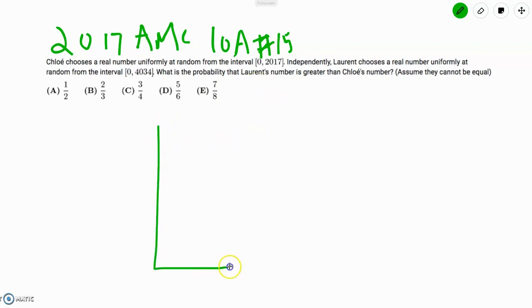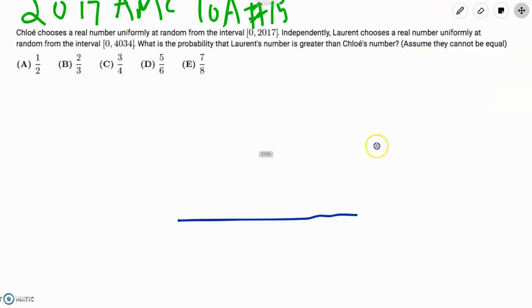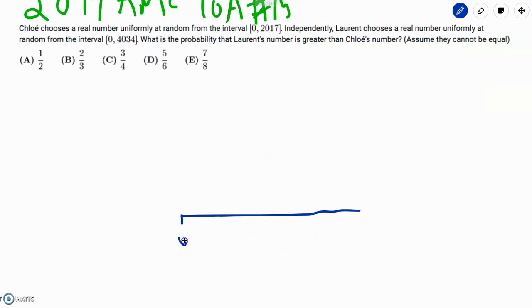So what I'm talking about is, suppose we had this sort of rectangle. Actually, I'll make the rectangle blue and red. So essentially, Chloe chooses a number from 0-2017, and she can pick any number along this line, and that will be her number. Now, or Chloe, this is, sorry, Chloe, this is Chloe. She picks a number from 0-2017.